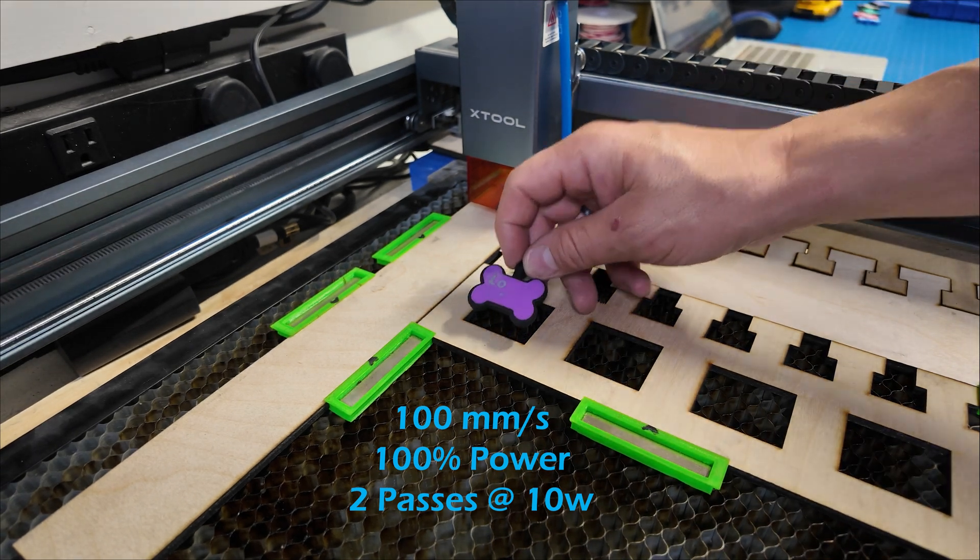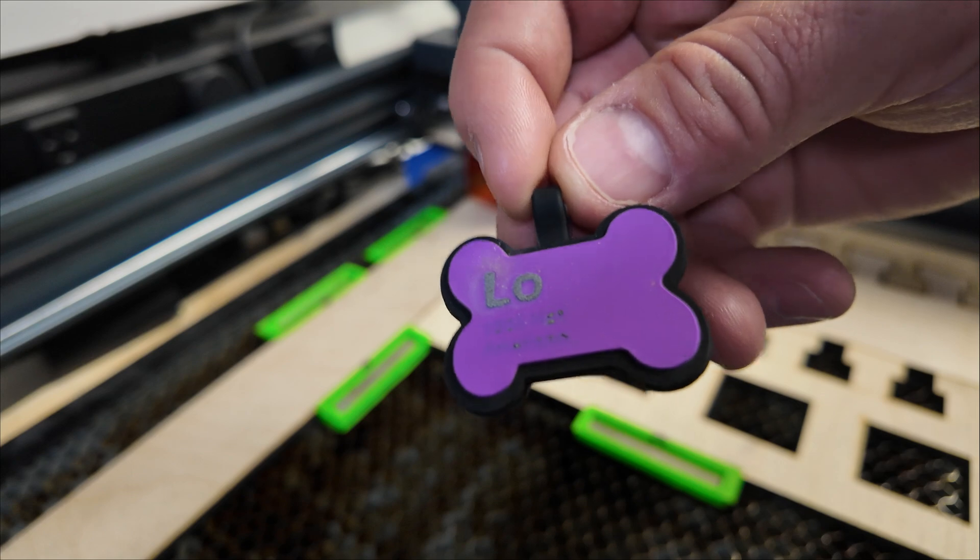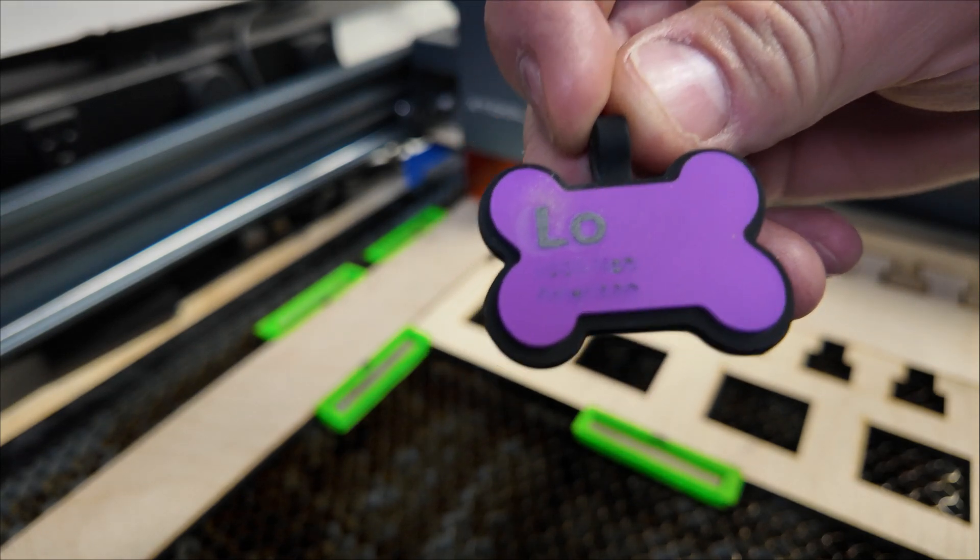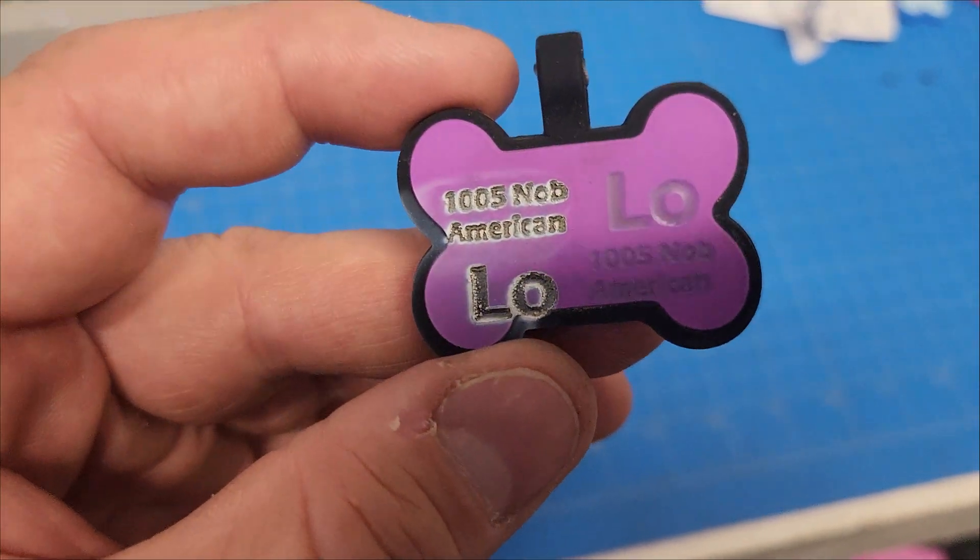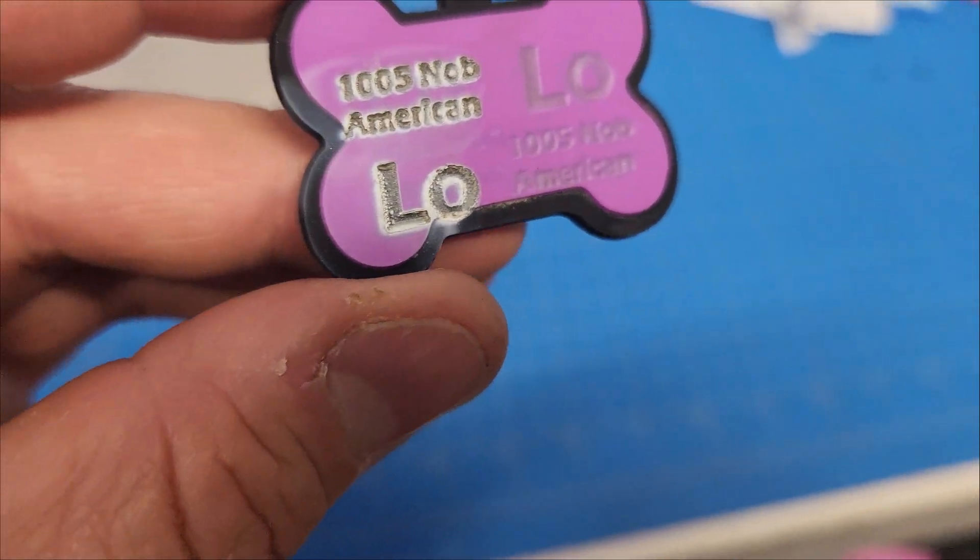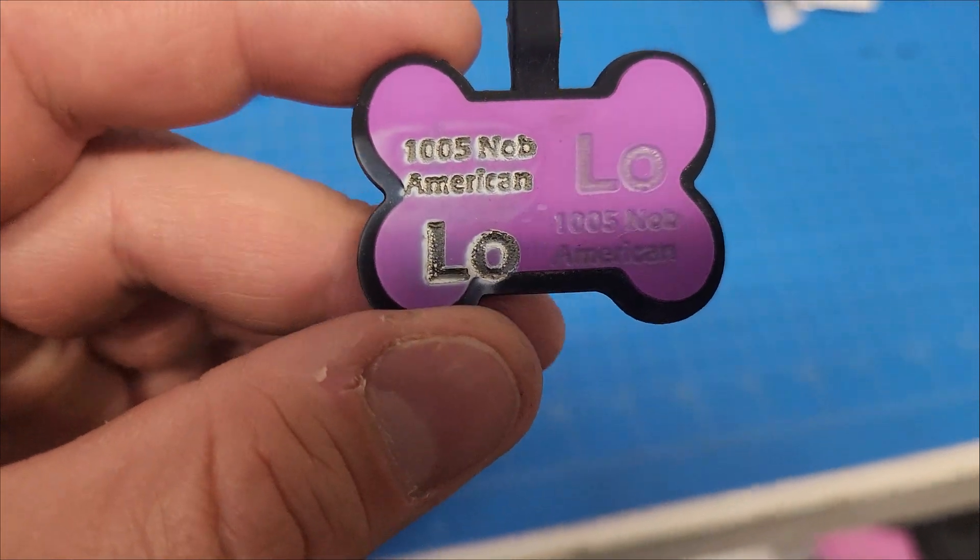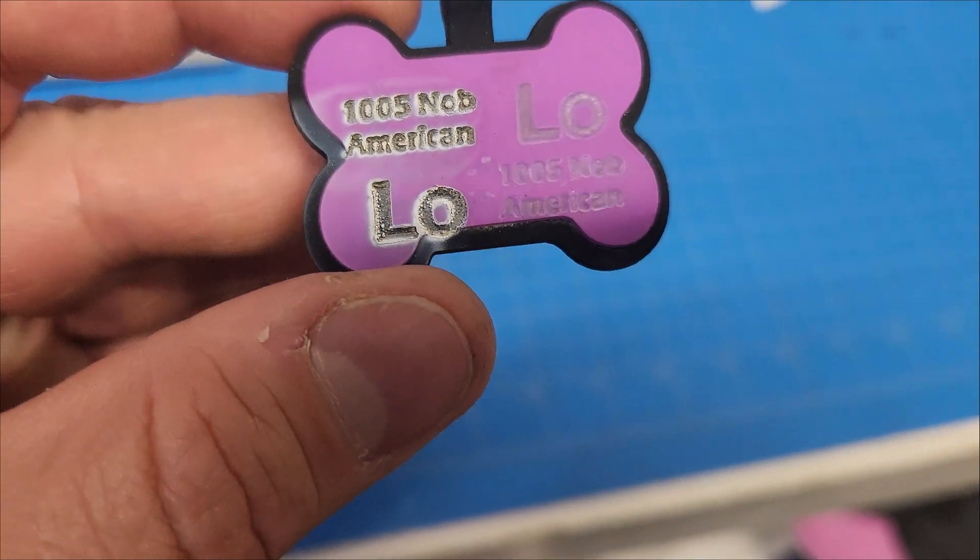And off the bat, we can tell that it didn't come close to penetrating the first layer of silicone. So we've got to crank the speed down and try again. What we're wanting to see is this gray ash come up from the silicone dog tags. That means you penetrated below that first layer and hit that second black layer.